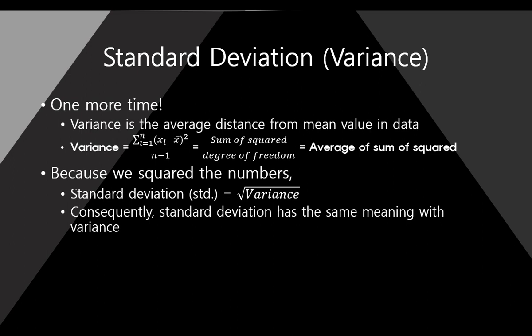One more time: variance is the average distance from the mean value. It is calculated as the sum of squares divided by the degree of freedom — this is the average of the sum of squares. To avoid sign cancellation, we squared all observations. If we take the square root of the variance, we get the standard deviation. The value is different, but the meaning is the same for standard deviation and variance.